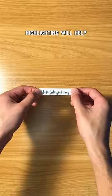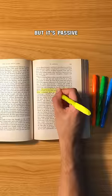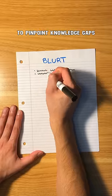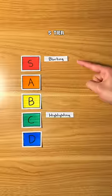Let's rank different study techniques. Highlighting will help you pull out main ideas, but it's passive. C tier. Blurting is by far my favorite way to pinpoint knowledge gaps with active recall. S tier.